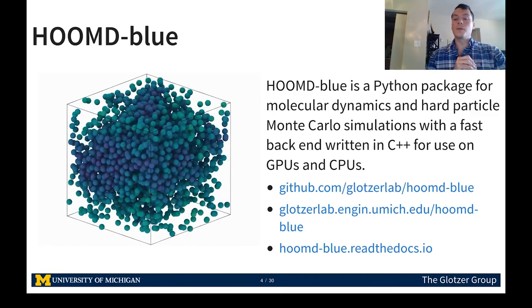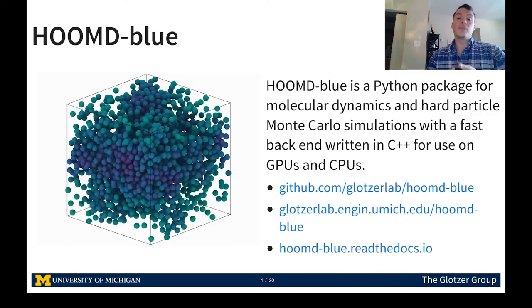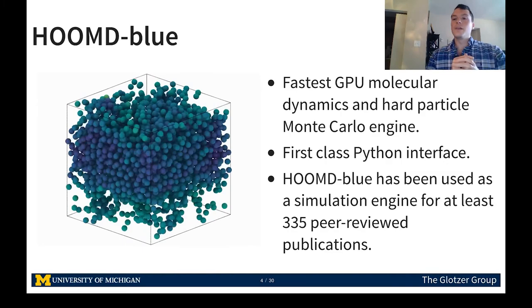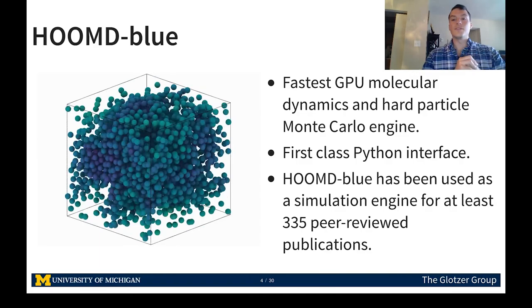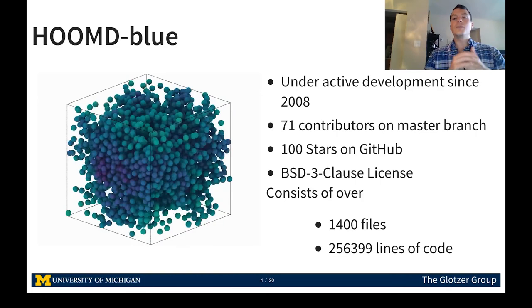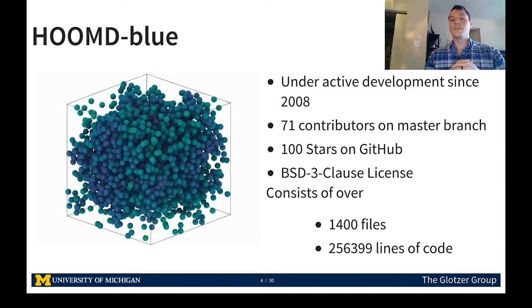HOOMD-Blue serves as a Python package for molecular dynamics and hard particle Monte Carlo simulations, with a backend written in C++ and CUDA/HIP for use on GPUs and CPUs. HOOMD-Blue is optimized for GPU use and is the fastest GPU molecular dynamics and hard particle Monte Carlo simulation engine. Its Python interface provides a full programming environment, greatly increasing customization potential, and it has been used in at least 335 peer-reviewed publications. It's been under active development since 2008, has 71 contributors, over 100 stars on GitHub, uses a BSD-3 clause license, and consists of over 1,400 files and 250,000 lines of code.